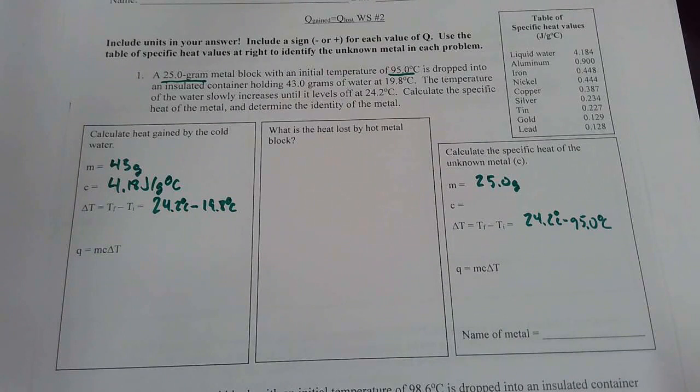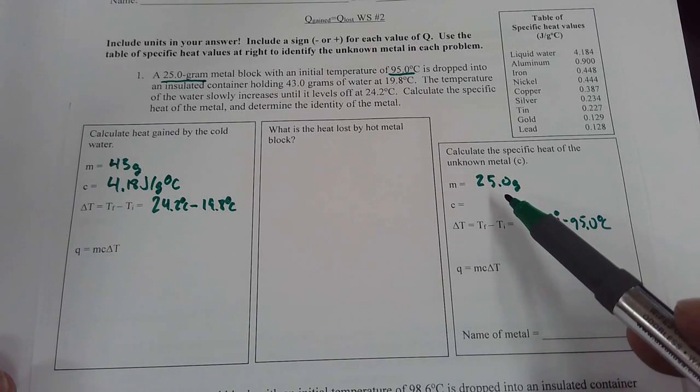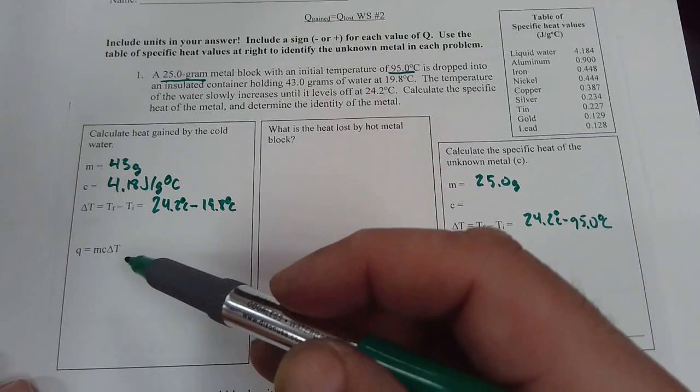So what we're going to do is we need to find the Q because right now we're missing the specific heat and the Q for the metal. In the water we're only missing the Q.